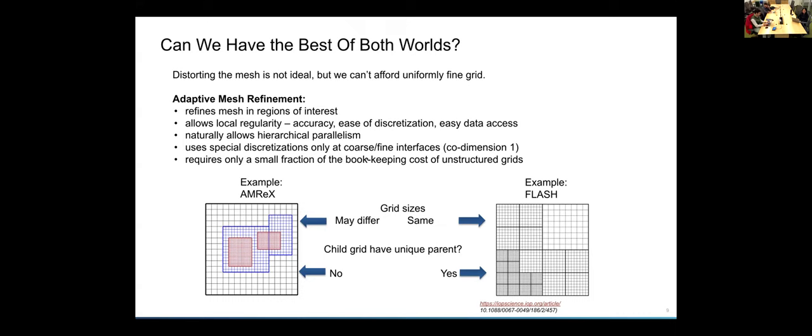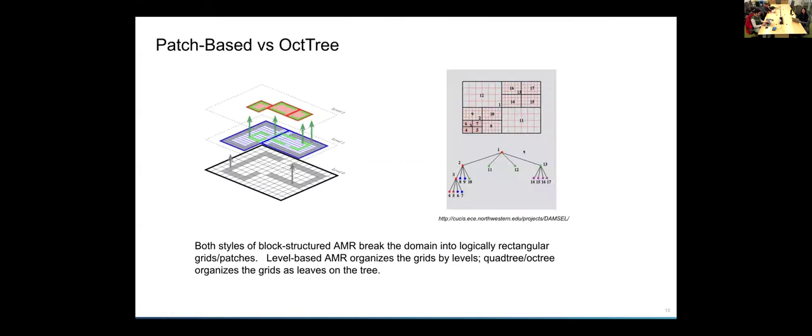And then finally, one more distinction. There's sort of two different styles of mesh refinement that are in the structured grid space. So you can have block structured mesh refinement, which is what AMReX does. This picture on the left, or you can have tree-based mesh refinement. An example of a code or framework that does that is flash, flash code. But there you're kind of using a tree structure like this to keep track of the different levels of refinement. Whereas in AMReX, we're breaking the domain into these logically rectangular grids or patches and organizing them by level.